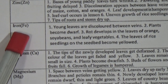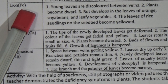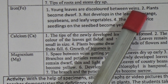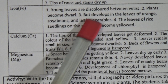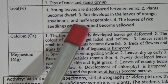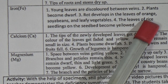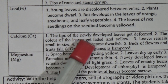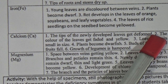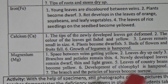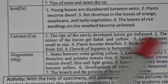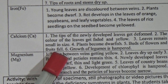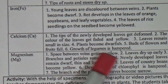Let's see Iron, whose chemical symbol is Fe. 1. Young leaves are discolored between veins. 2. Plants become dwarf. 3. Rot develops in the leaves of orange, soybeans, and leafy vegetables. 4. The leaves of dry seedlings on the seedbed become yellowed. Calcium: 1. The tips of the newly developed leaves get deformed. 2. The color of the leaves gets faded and yellow.